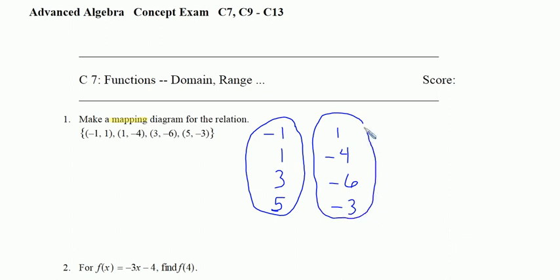You could use rectangles, triangles, ovals, whatever shape you want, and then we need to show this mapping. So we need to show that negative one maps to one with an arrow. We show that one maps to negative four, three maps to negative six, and finally five maps to negative three. That's our mapping diagram for this relation.